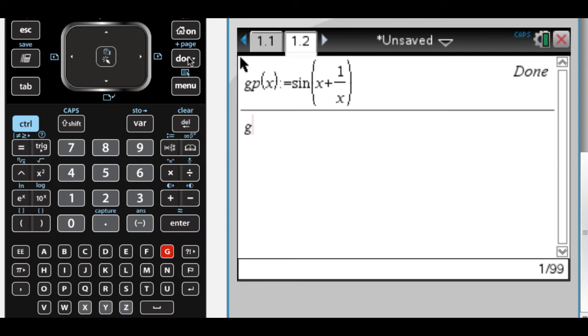And then g double prime, which I don't know, gpp I guess of x, or maybe gdp of x, not to be confused with the economic thing. I don't know why they're giving this to you exactly, but they are. So let's define it.